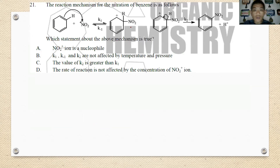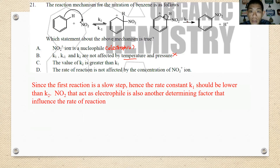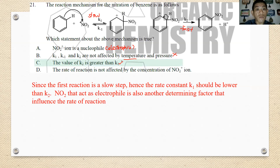Number twenty-one: the mechanism for the nitration of benzene is shown. Statement 1: NO2 acts as a nucleophile — no, NO2+ is an electrophile. Statement 2: NO2 is not affected by temperature or pressure — no, all reaction rates are influenced by temperature. Statement 3: the value of K2 is greater than K1 — since step 1 is slow and step 2 is fast, K2 is definitely greater than K1 — this is correct. Statement 4: the rate is not affected by NO2 — wrong, as step 1 is the slow step. The answer is C.